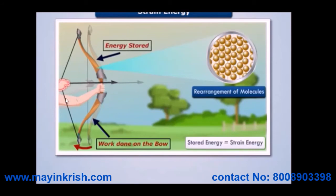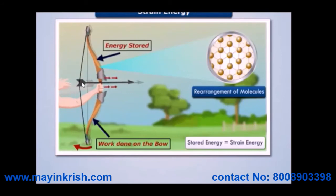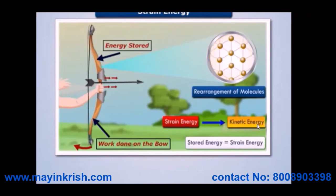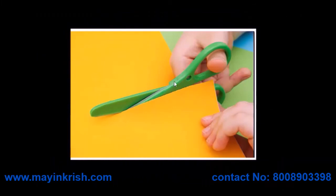When we release the string, the arrow moves toward the object. Finally, the strain energy is converted into kinetic energy. In the same way, we will discuss the area under the shear force diagram.